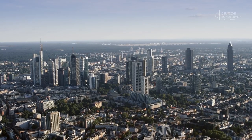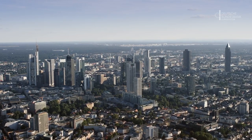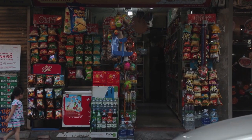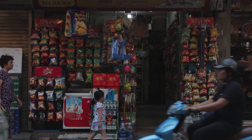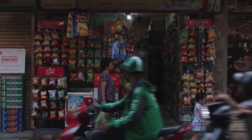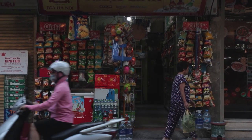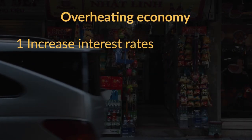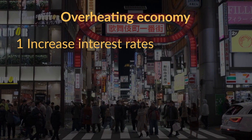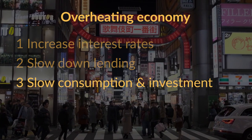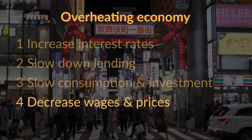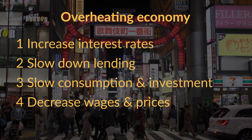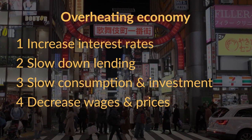How does the interest rate matter for all of this? A low interest rate tends to boost investment and consumption, meaning the economy performs well and unemployment is low. But if the economy is performing too well with an extremely tight labor market, inflation is likely to be above target. In that case, the central bank should increase the interest rate, slowing down lending, consumption, and investment, cooling the labor market — wages stop increasing, and so do prices.